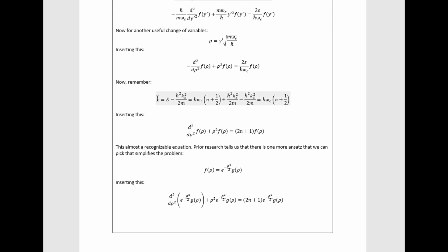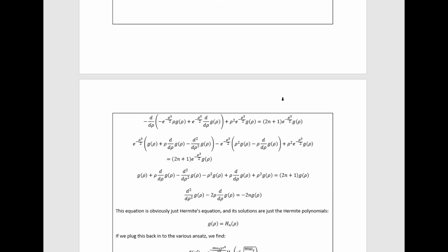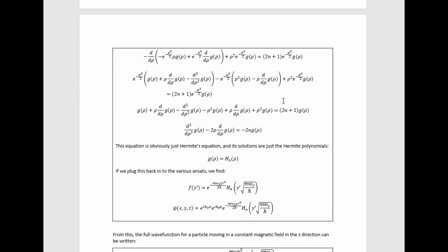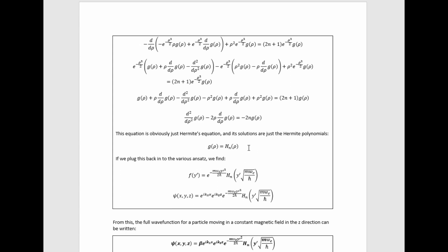So if we then plug in another ansatz that research before us has proven to be productive, and then do a bunch more algebra, and ultimately simplify down, we arrive at this one. This equation is obviously just Hermite's equation. It's the iconic equation solved by the Hermite polynomials. So we see that the solution, g of rho, just are the Hermite polynomials straight up.